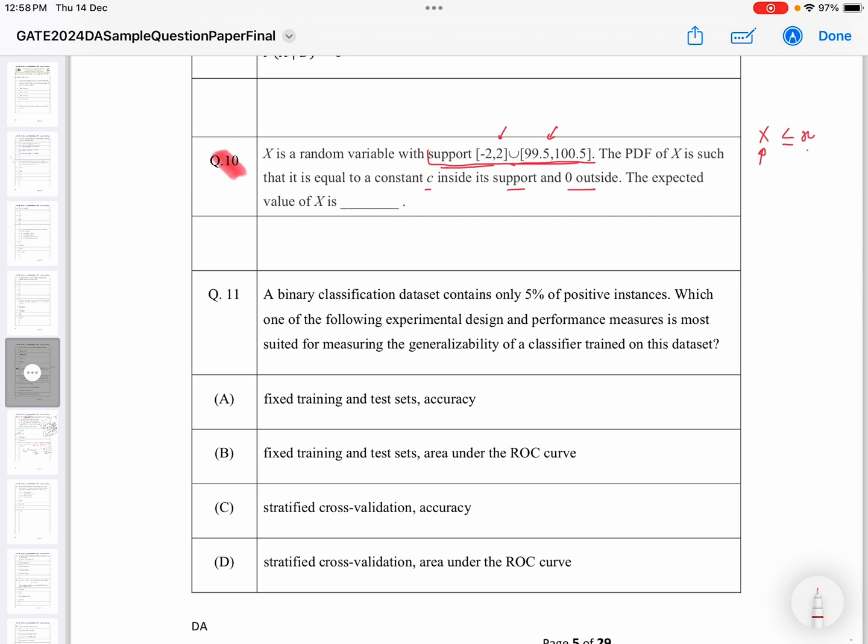We have given that the PDF of X is such that inside the support - if we have to write the PDF of X - then from -2 to 2 we have some constant C, and again from 99.5 to 100.5 we have some constant C. So this is what I can say - a piecewise continuous PDF, probability density function. This is piecewise continuous because discontinuity is there in this PDF.